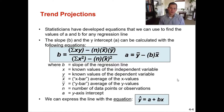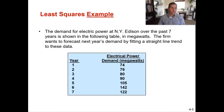B is the slope of the regression line. X is the known values of the independent variable. Y is the known values of the dependent variable. Your x-bar is the average of the x values. Your y-bar is the average of the y values. Your n is the number of data points or observations. And your A is your y-axis intercept. We can express the line with the equation y-hat equals A plus Bx. You will be asked to either calculate the slope, the y-intercept, or make a forecast in future time.